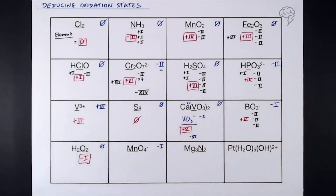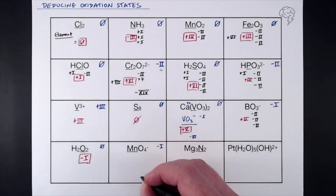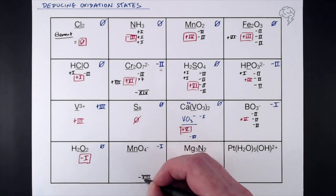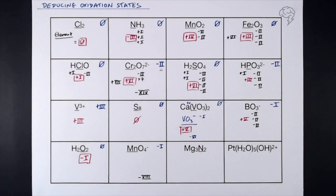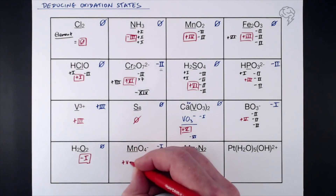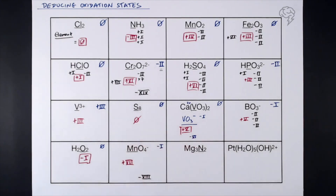The manganate ion MnO₄⁻ has an overall oxidation state of −1. We've got four lots of −2 for oxygen, giving −8. The difference between −8 and −1 is +7, so manganese has a +7 oxidation state. This is a very common one — it's called potassium manganate(VII), named after the +7 oxidation state of manganese.